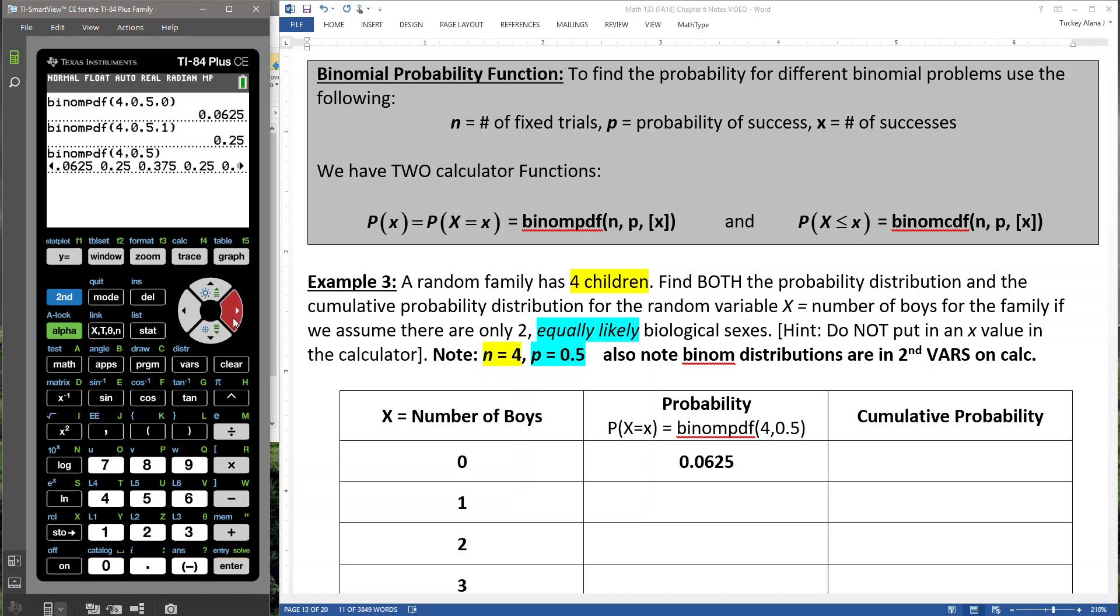There's the probability of 0. There's the probability of 1, 0.25. There's the probability of 2, 0.375. The probability of 3 is 0.25, and the probability of 4 is 0.0625.